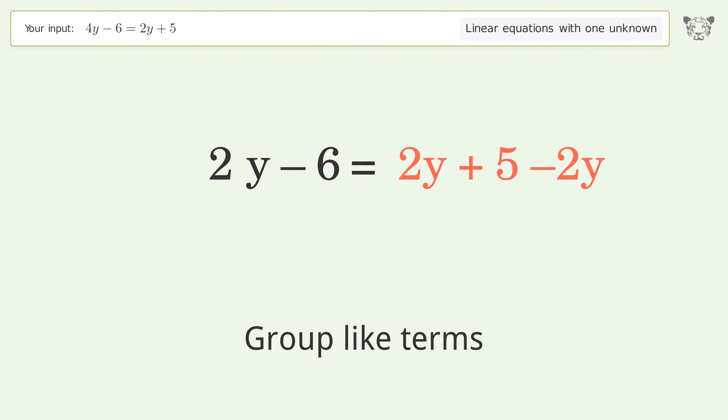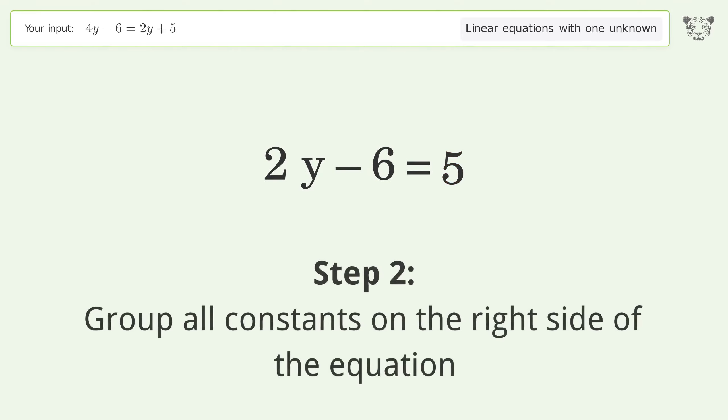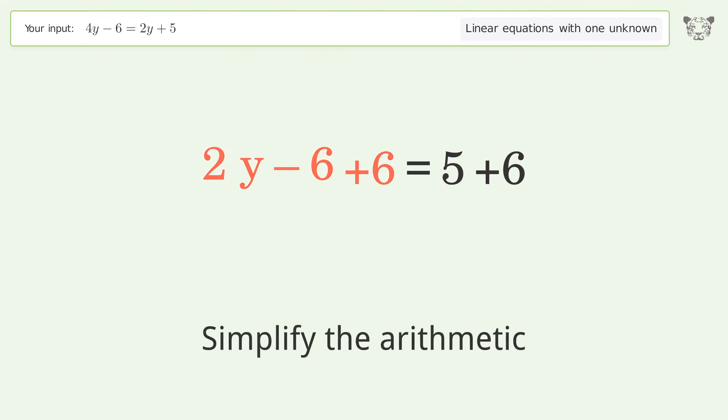Group like terms and simplify. Group all constants on the right side of the equation. Add 6 to both sides. Simplify the arithmetic.